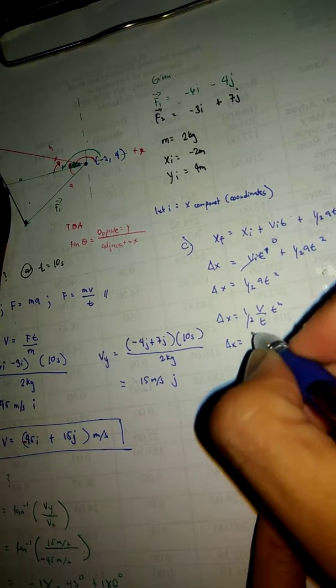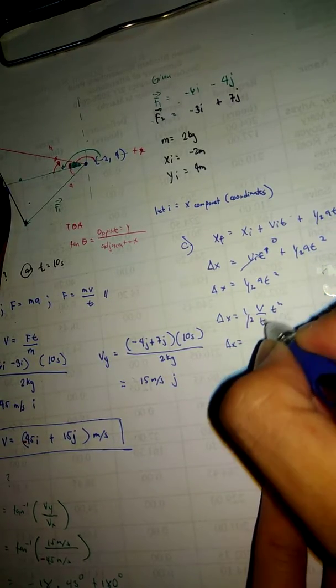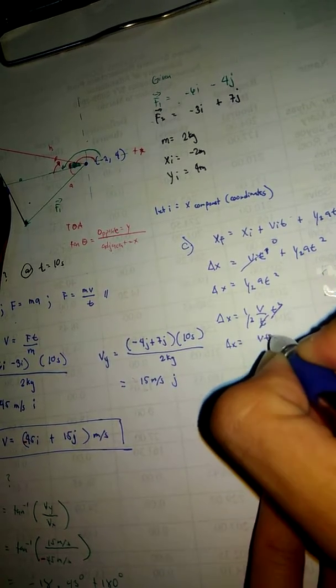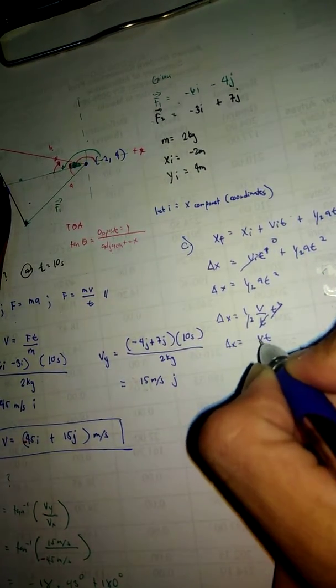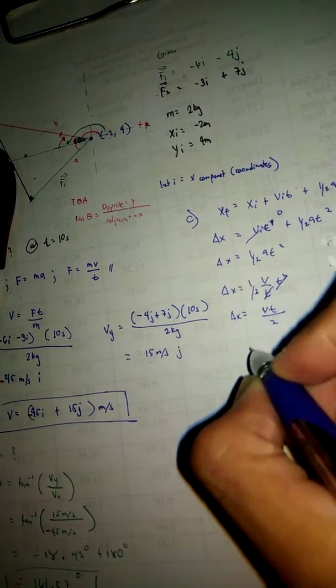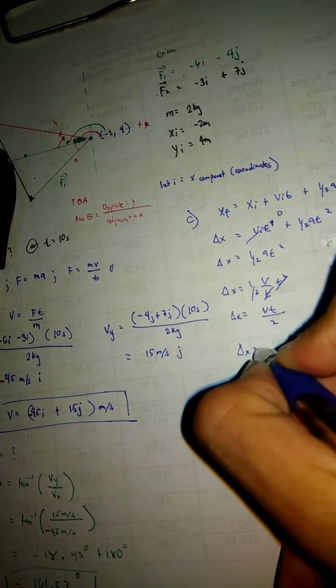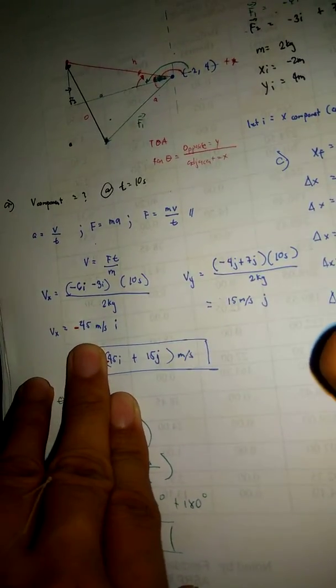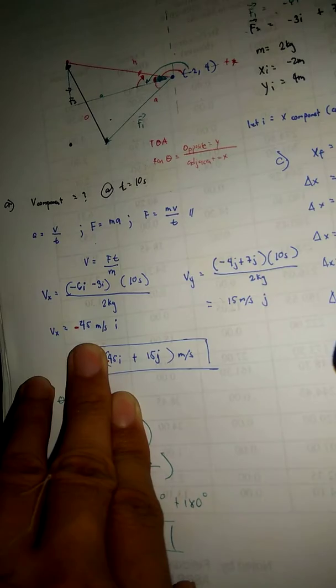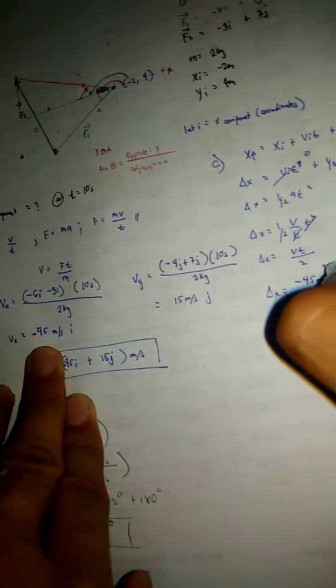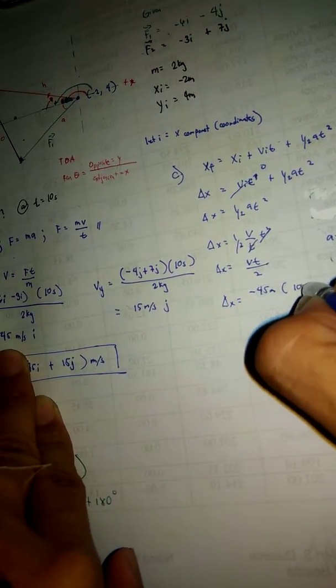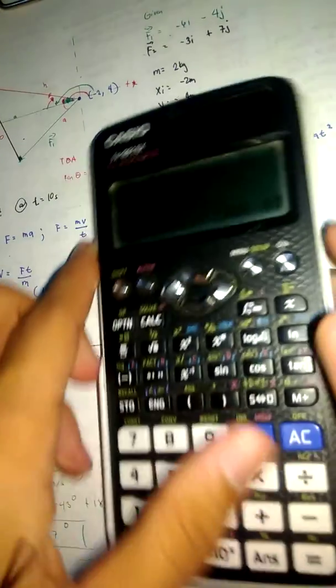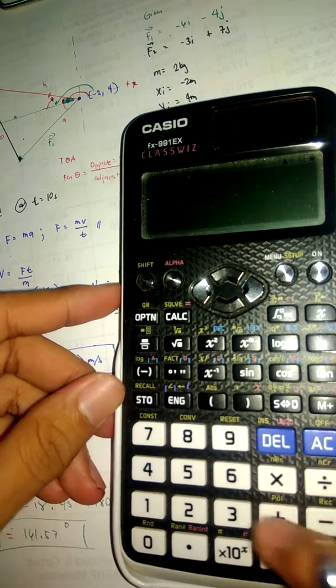Delta X would be, cancel this. So it would be VT over 2. Delta X using this velocity, negative 45 meters times 10 seconds over 2 equals negative 225 meters.